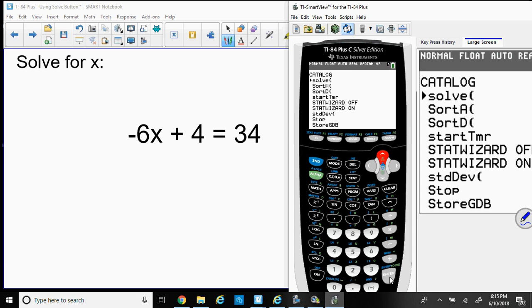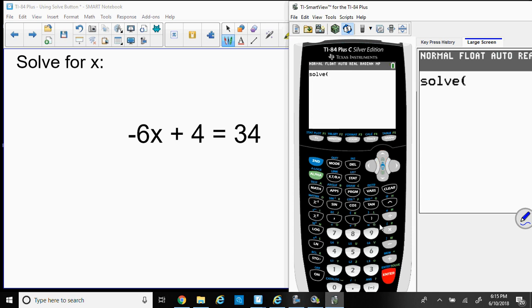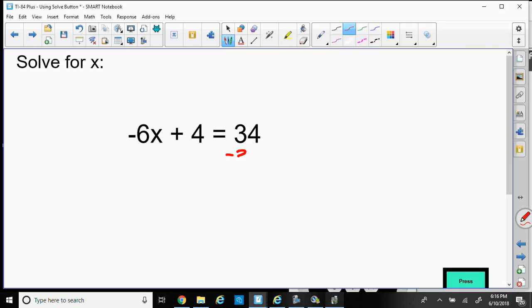So we're gonna press ENTER and now we have to type in our equation. We want the equation equal to zero. So that means we're going to have to set this equal to zero. So let's put this equation, make it equal to zero by taking 34 from both sides, minus 34. So I know the 34s will cancel out and make that equal to zero.